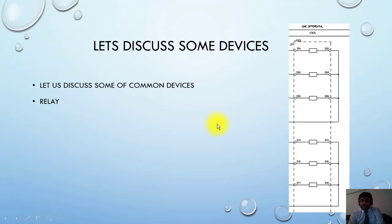This is the F87L. This is basically a relay, differential relay, and these are the current inputs shown here for one side, and this is the current input for another side. You can see here the terminal numbers are also mentioned.